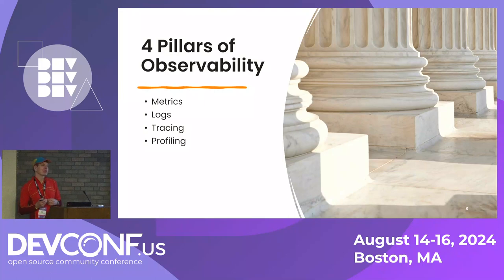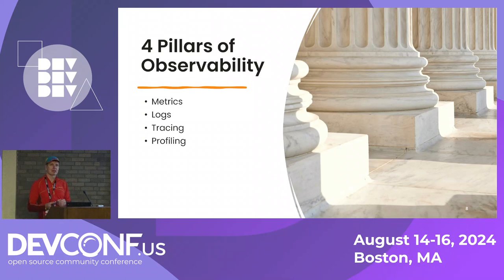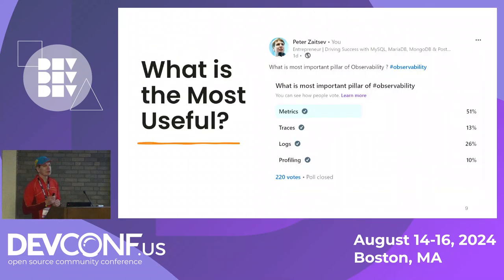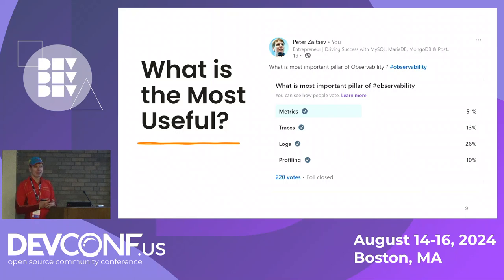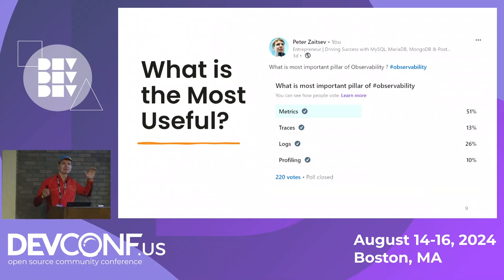When you talk about observability, we often talk about the pillars of observability. Some people talk about three pillars, some use as many as five. I picked four — for a stupid reason — I wanted to run a LinkedIn poll and could only have four options. What's interesting is looking at what people consider most important these days: metrics. What about you guys? Do you think metrics are most important or some other stuff?